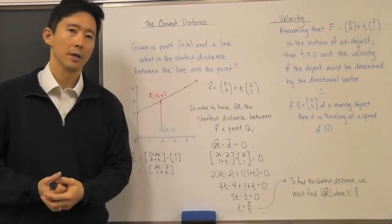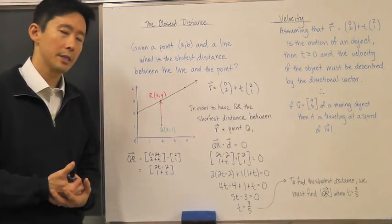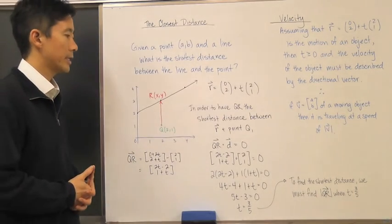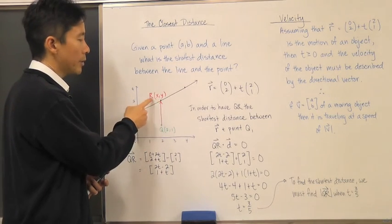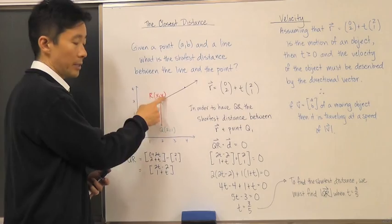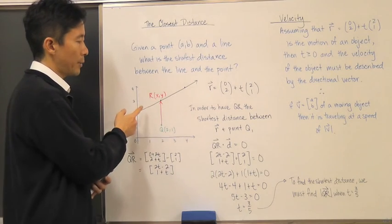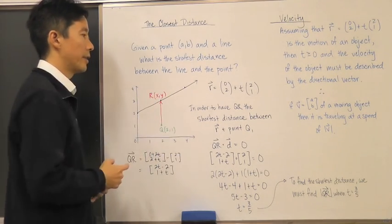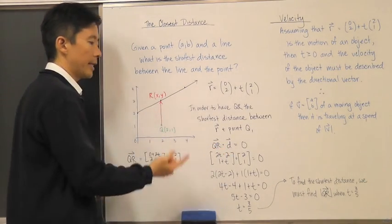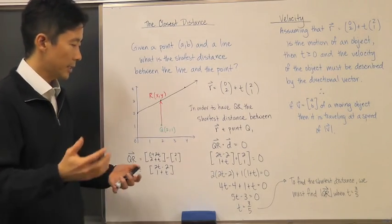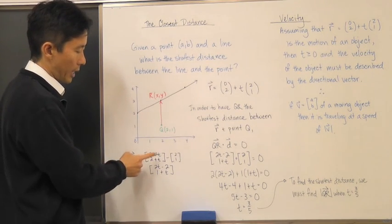How do we calculate the shortest distance between the point and the line using vector methods? We need to establish that the vector from Q to any point R on the line must be perpendicular to the directional vector of that line. If that's true, then the scalar product is zero, and we can find what we're looking for. We're looking for vector QR.